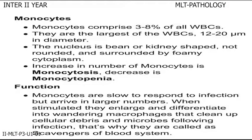Monocytes, comprising 3-8% of all WBCs, are the largest of all WBCs, 12-20 micrometers in diameter. The nucleus is bean or kidney shaped. The increase in number of monocytes is called monocytosis and decrease is called monocytopenia. Function of monocytes: monocytes are slow to respond to infection but arrive in larger numbers. When stimulated, they differentiate into wandering macrophages that clean up cellular debris and other microbes following infection, that is why they are called scavengers of the blood system.